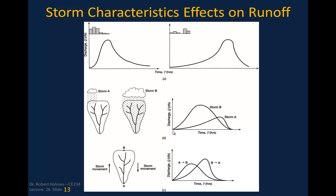Looking at storm characteristics: if the bulk of rainfall occurs early in the storm, the hydrograph peaks much quicker and falls faster, versus having bulk rainfall in the latter part, which produces a slow rise, then a later peak, followed by a rapid fall. Also, a storm covering the entire watershed produces much greater runoff volume than one covering only a small part. When rainfall begins far upstream, it takes a long time for that water to travel to the lower part of the watershed.